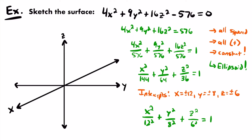Since we are centered at the origin, we'll label our intercepts along each axis. For x we have ±12, for y we have ±8, and for z we have ±6. I'll label x = 12 and x = -12, y = 8 and y = -8, and z = 6 and z = -6.